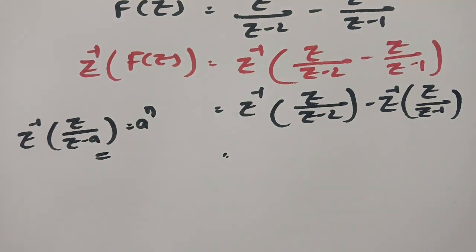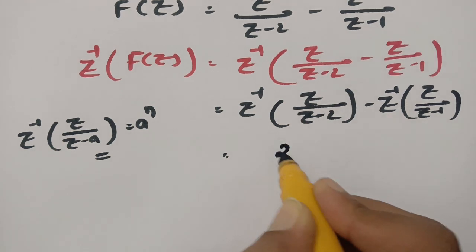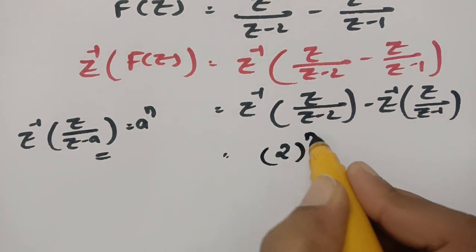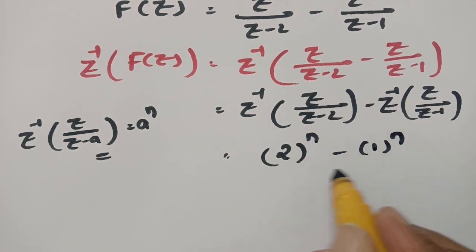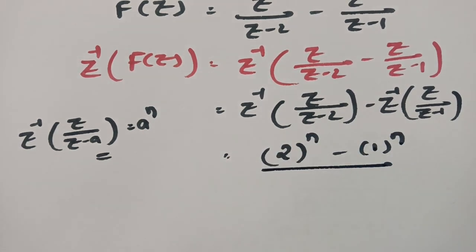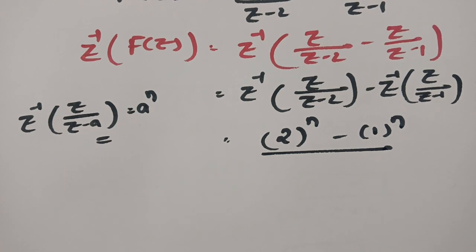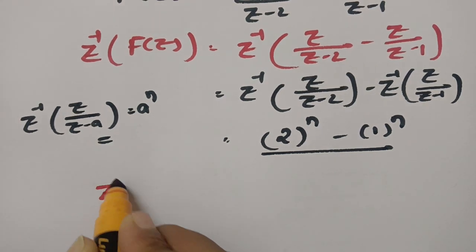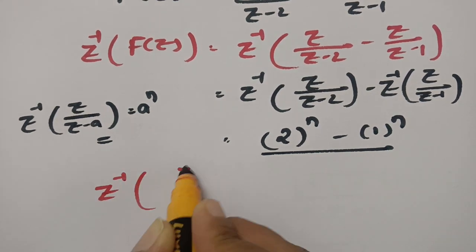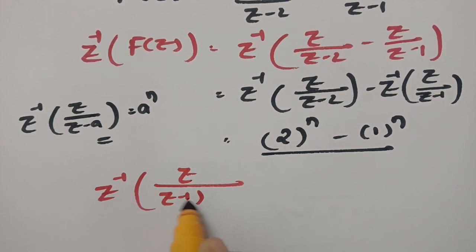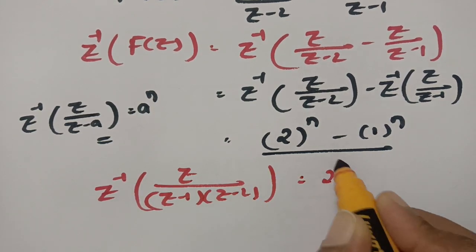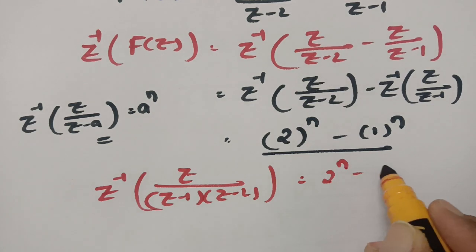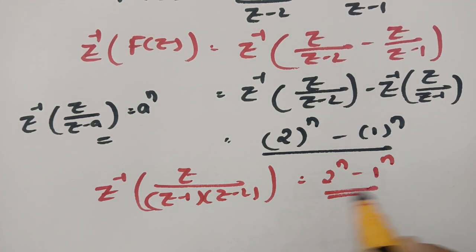According to our special functions in Z transforms, we can write this as 2 power N minus 1 power N. Therefore, Z inverse of Z by Z minus 1 into Z minus 2 is equal to 2 power N minus 1 power N.